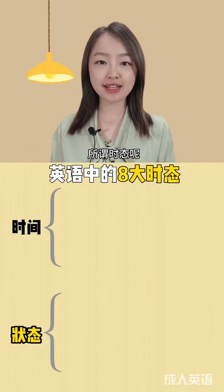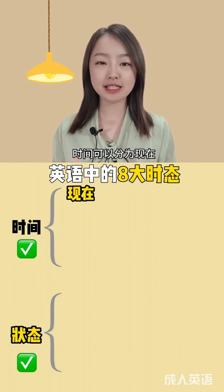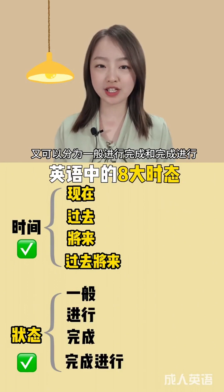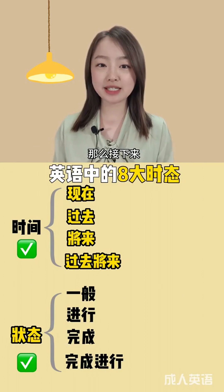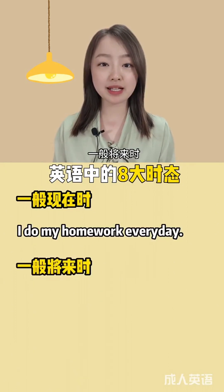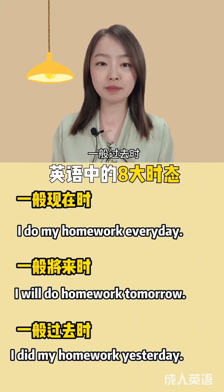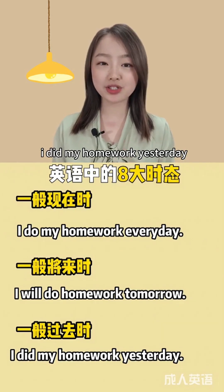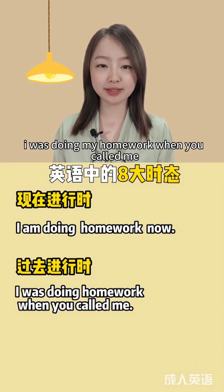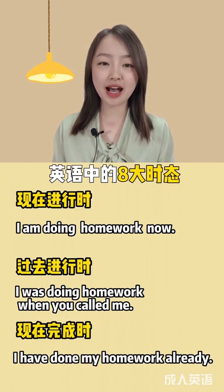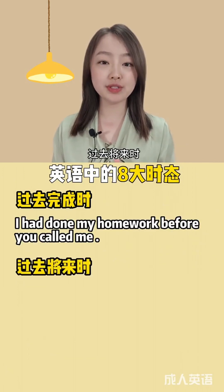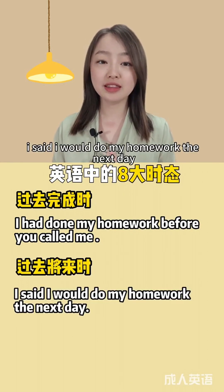今天一次性带你搞定英语的八大时态。时态就是动作发生的时间和状态，时间分为现在、过去、将来和过去将来，状态分为一般、进行、完成和完成进行。一般现在时：I do my homework every day。一般将来时：I will do my homework tomorrow。一般过去时：I did my homework yesterday。现在进行时：I am doing my homework now。过去进行时：I was doing my homework when you called me。现在完成时：I have done my homework already。过去完成时：I had done my homework before you called me。过去将来时：I said I would do my homework the next day。你明白了吗？